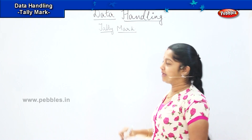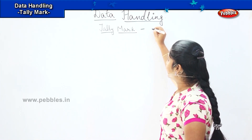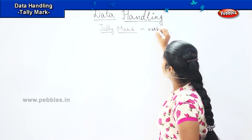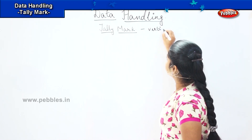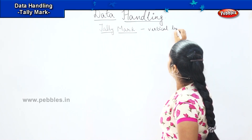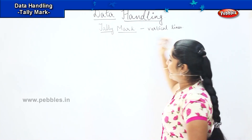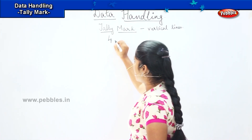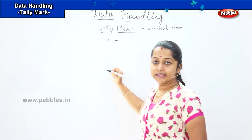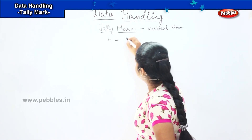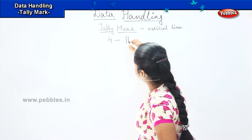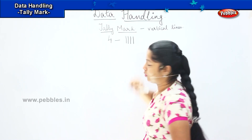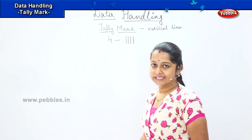Tally mark is nothing but we are representing the data using vertical lines. For example, if I have to mark 4, how will I represent it in tally mark? I will be drawing 4 vertical lines: 1, 2, 3, 4. Is it clear?